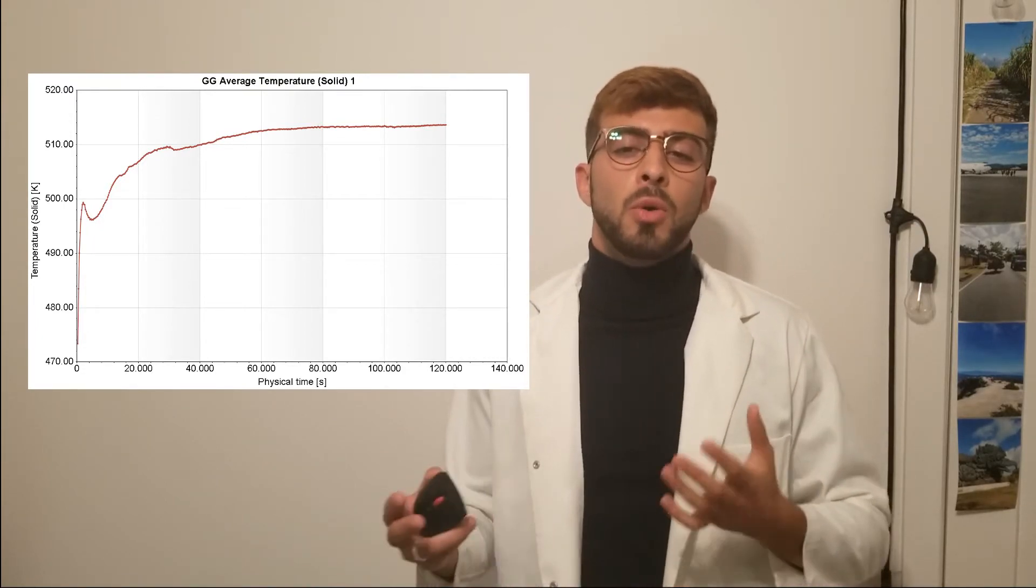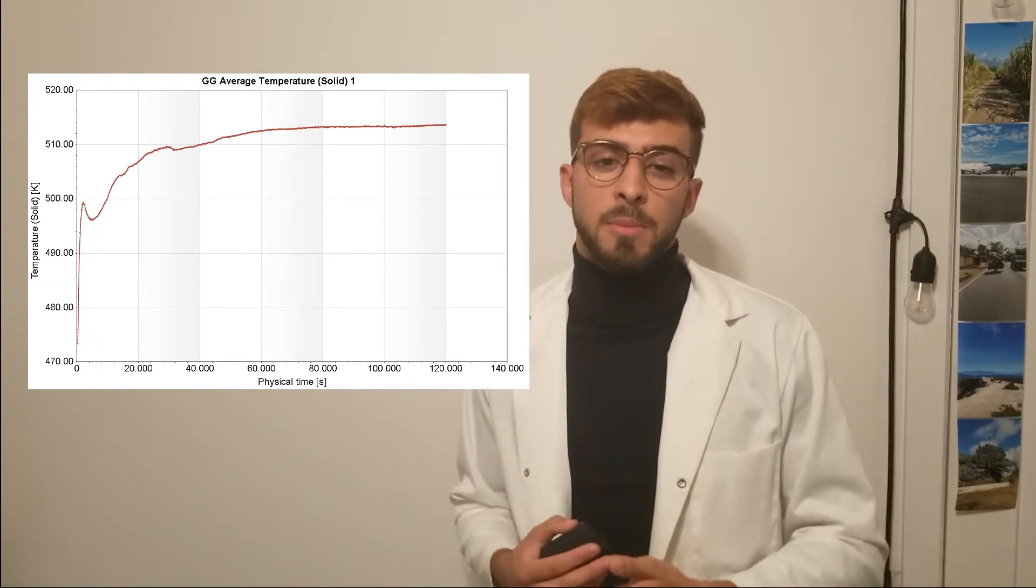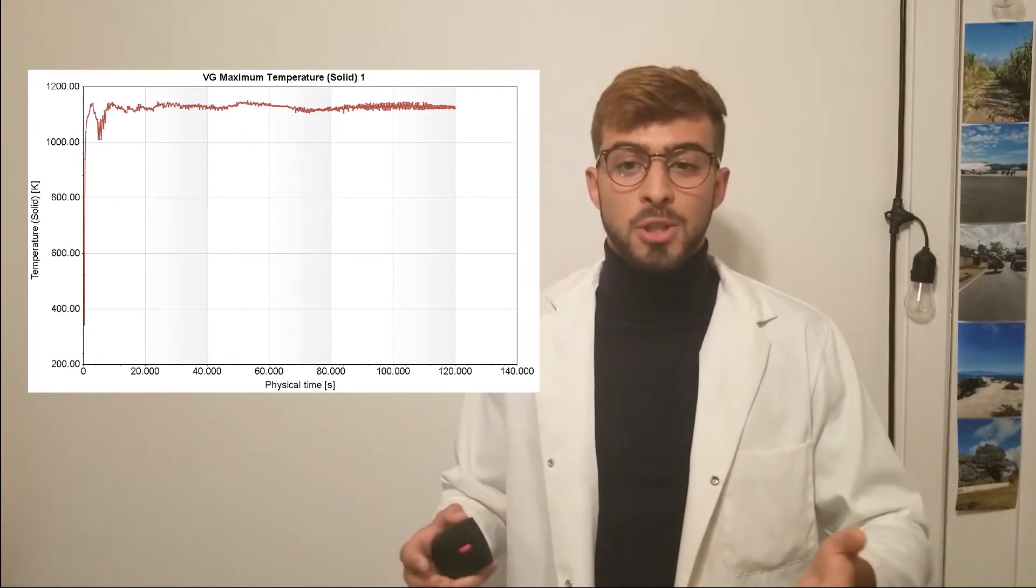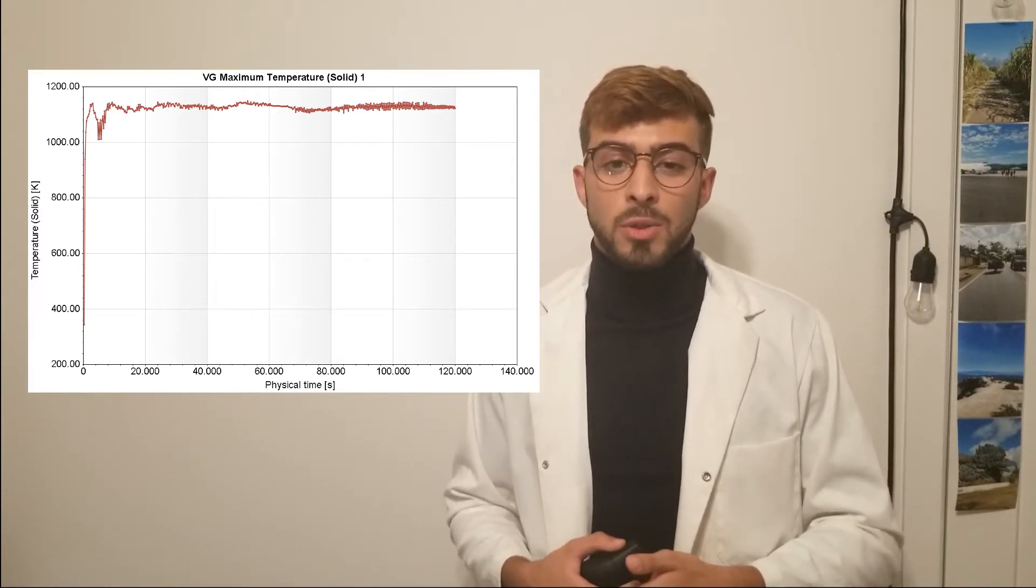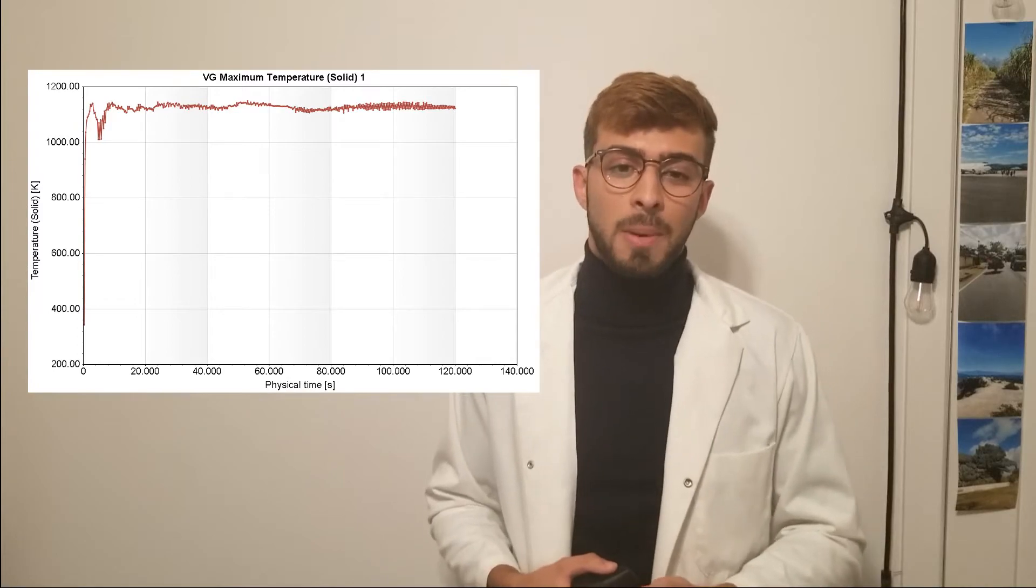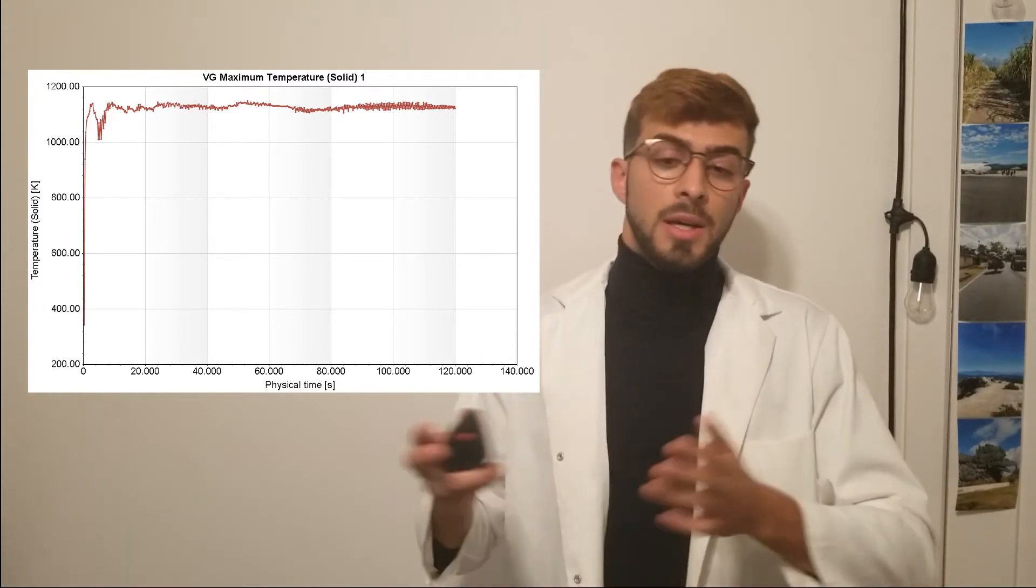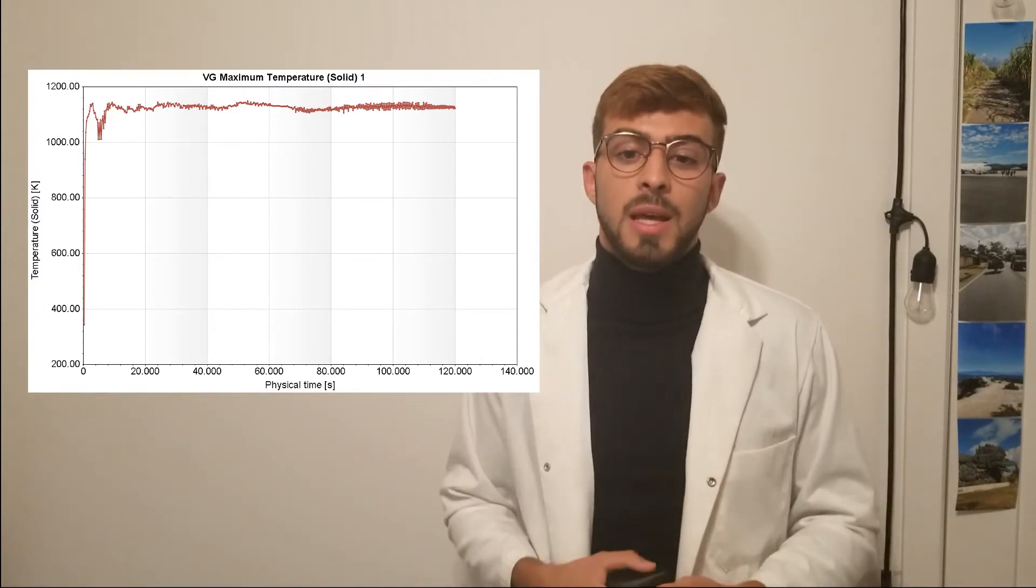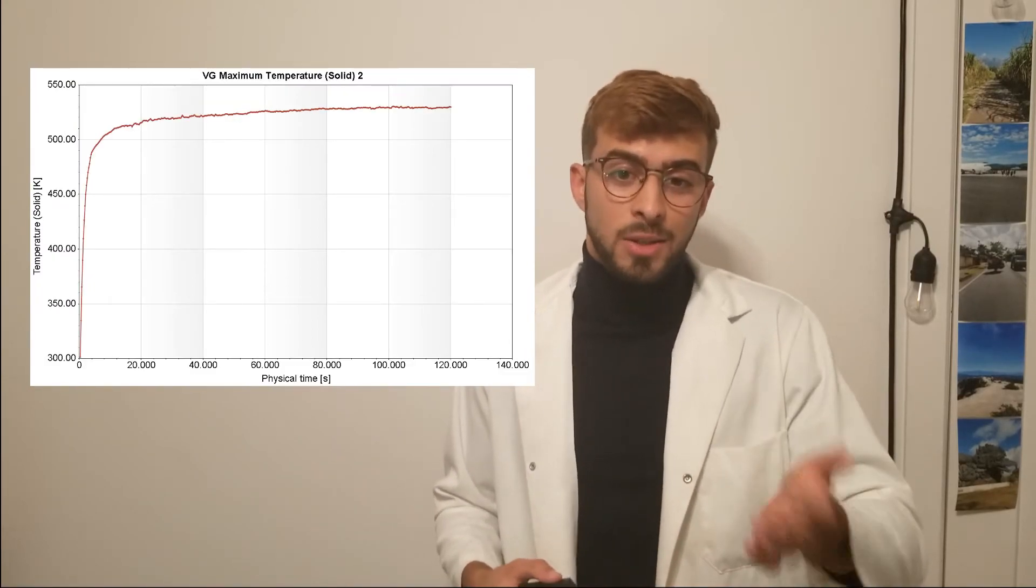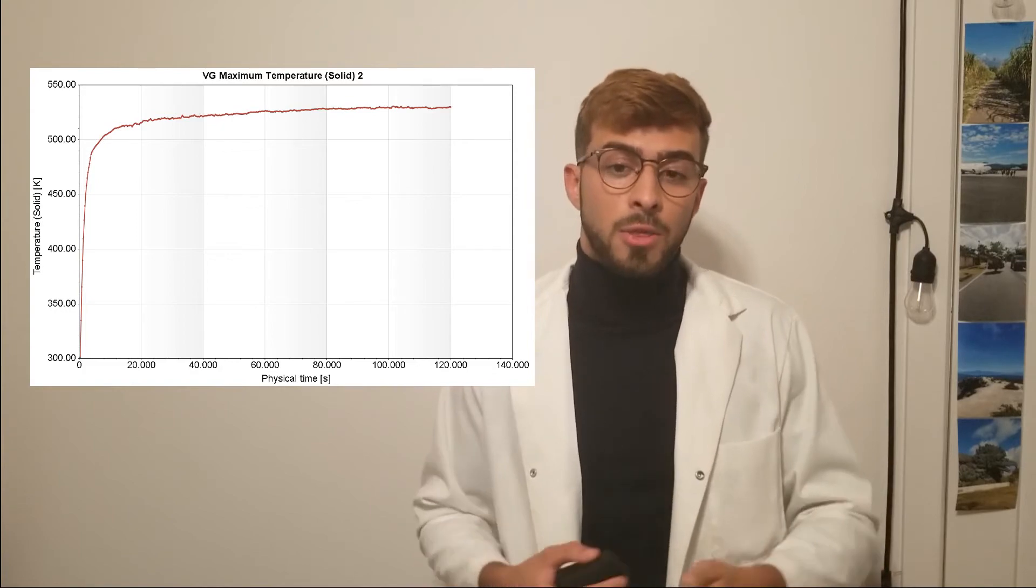But obviously, average temperatures don't take into account the local capacities of the material. So here is the stable maximal local temperature of the plug, which reaches 1122 Kelvin, which is under the operating temperature of silicon carbide, which goes from 1200 Kelvin to 1700-1800 Kelvin. And we have a stable maximal local temperature at the steel combustor as well of 530 Kelvin, which is under the operating temperature of mild steel of 800 Kelvin.